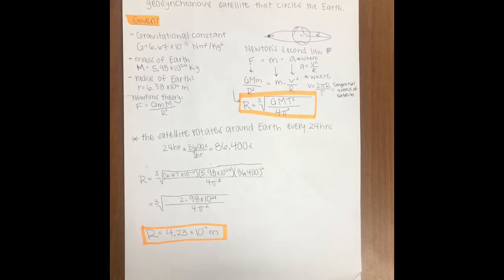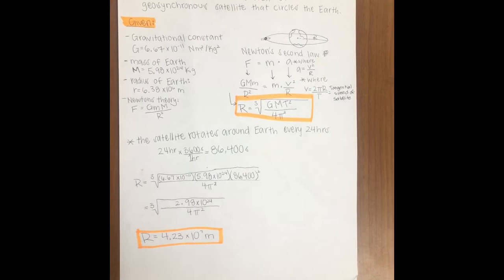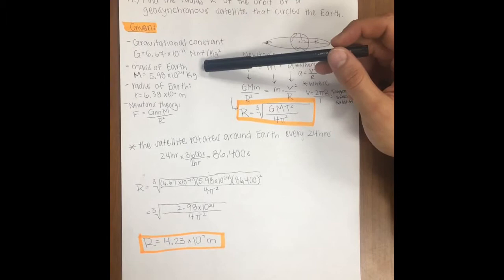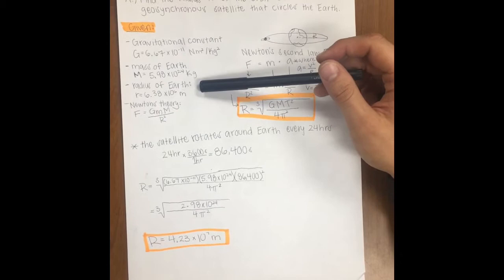The problem is: find the radius r of the orbit of a satellite that circles the Earth. Some of our given quantities are the gravitational constant G, which is different from small g, 6.67 times 10 to the negative 11. We have the mass of the Earth, which is 5.98 times 10 to the 24 kg, and the radius of the Earth, which is 6.38 times 10 to the 6 meters.